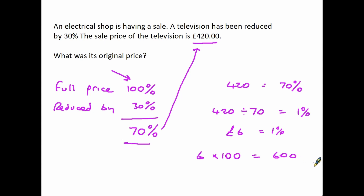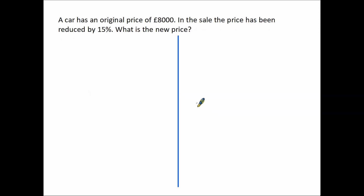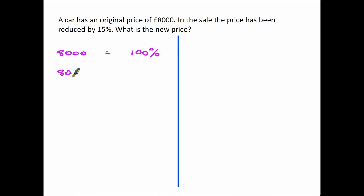We now need to find the original full price — the 100 percent. We have 1 percent, which is £6, so we multiply by 100 and we end up with £600. Now let's have a look at another question and work it out in both directions. We have a car with an original price of £8,000. Here's our starting point — £8,000 is our 100 percent, the total full price. If we take £8,000 and divide it by 100, we get 1 percent.